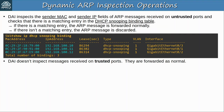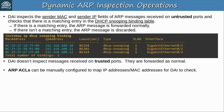Just like in DHCP snooping, all ports are untrusted by default, so you have to manually specify which ports are trusted. DAI operations are usually reliant on DHCP snooping, but there is another option — ARP ACLs can be manually configured to map IP addresses and MAC addresses for DAI to check. This can be useful for hosts that don't use DHCP. If they don't use DHCP, they won't have an entry in the DHCP snooping table, so DAI will drop all ARP messages they try to send. You can configure ARP ACLs for these specific hosts.